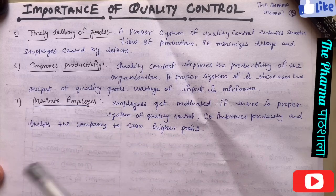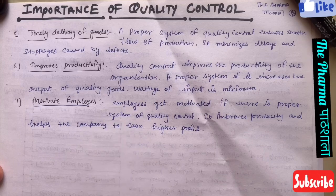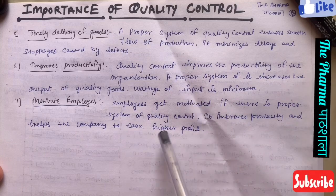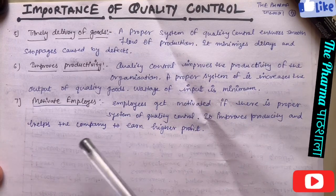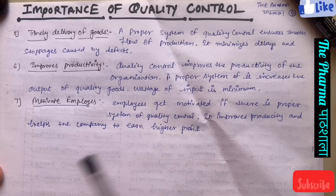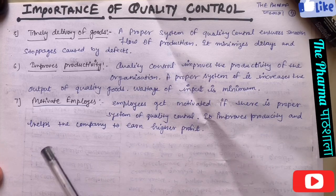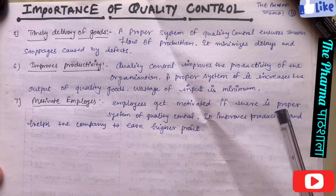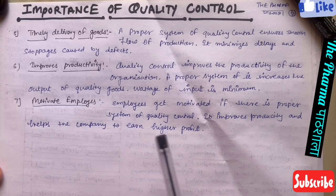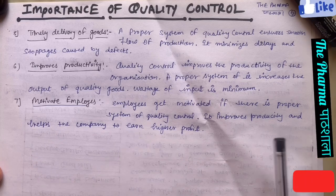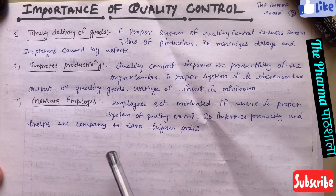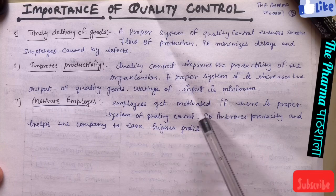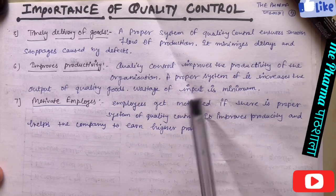If we have a good quality control system, we have a good way to produce consistently. This results in good productivity, good work, and higher profit earned by the company।